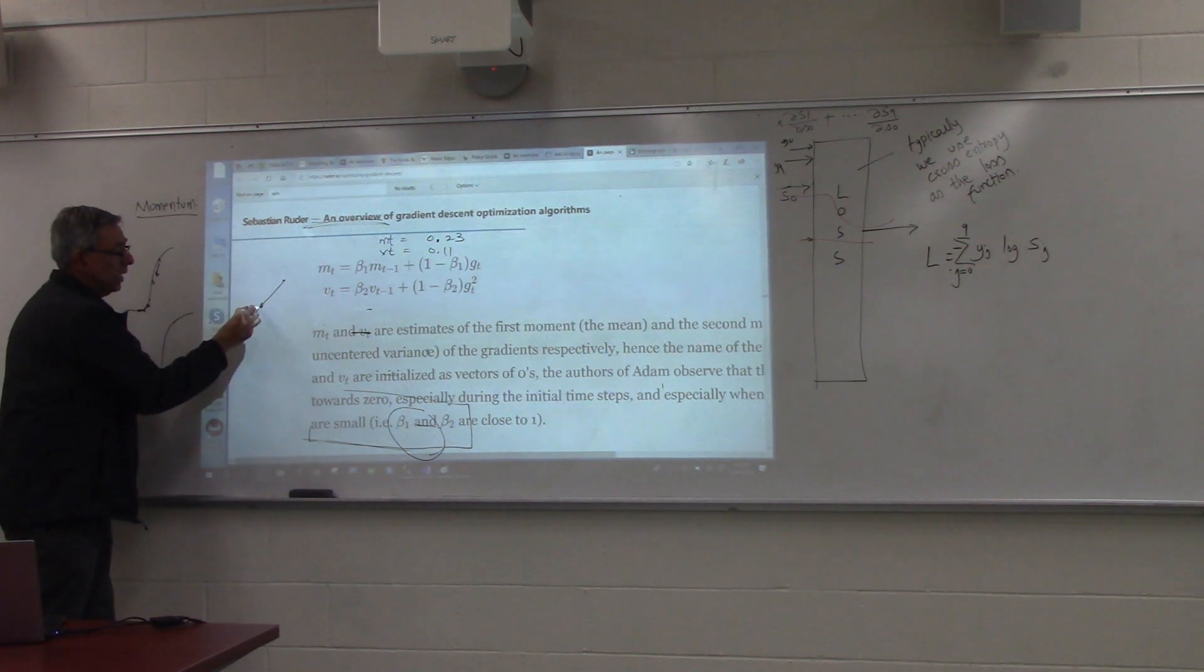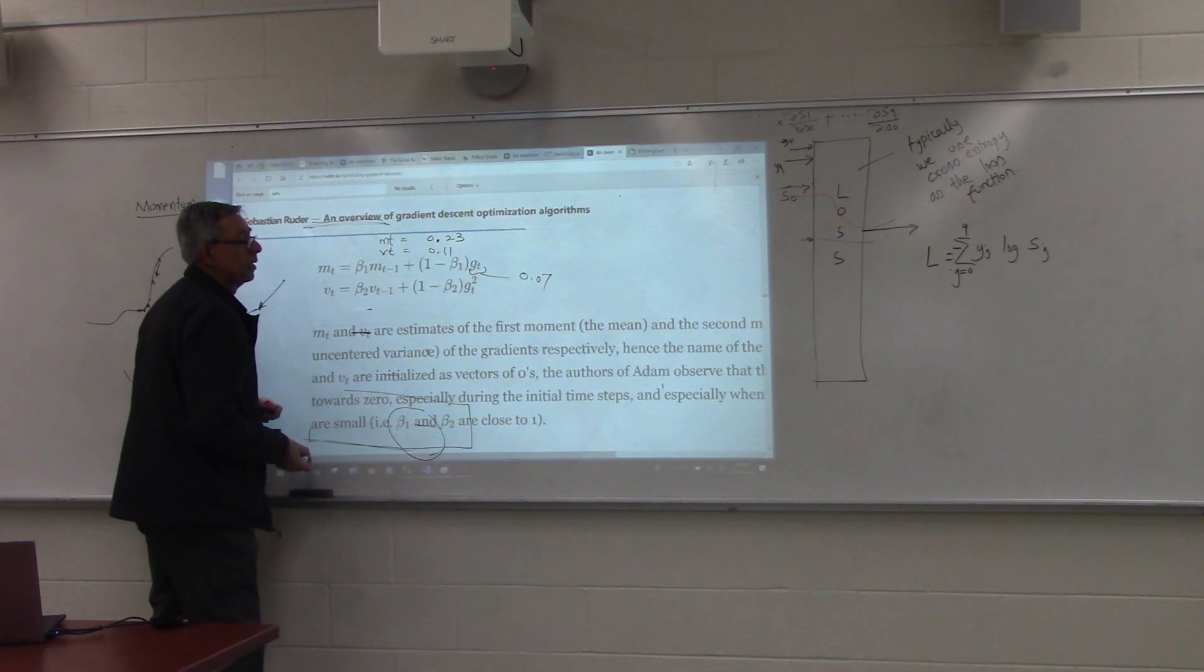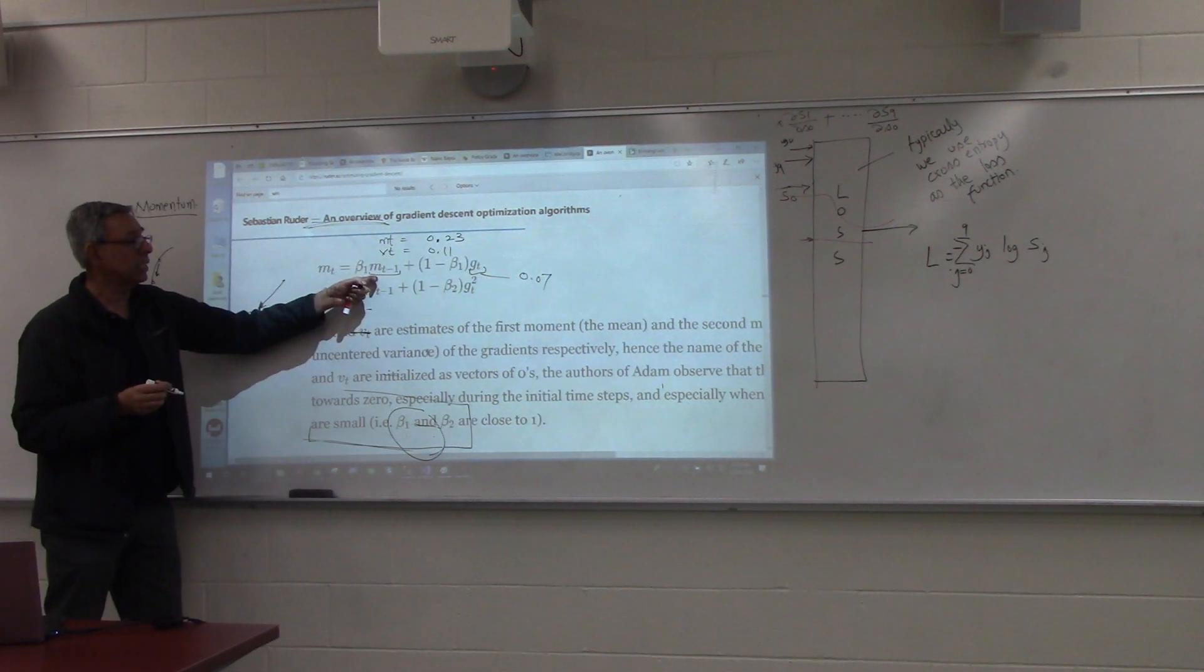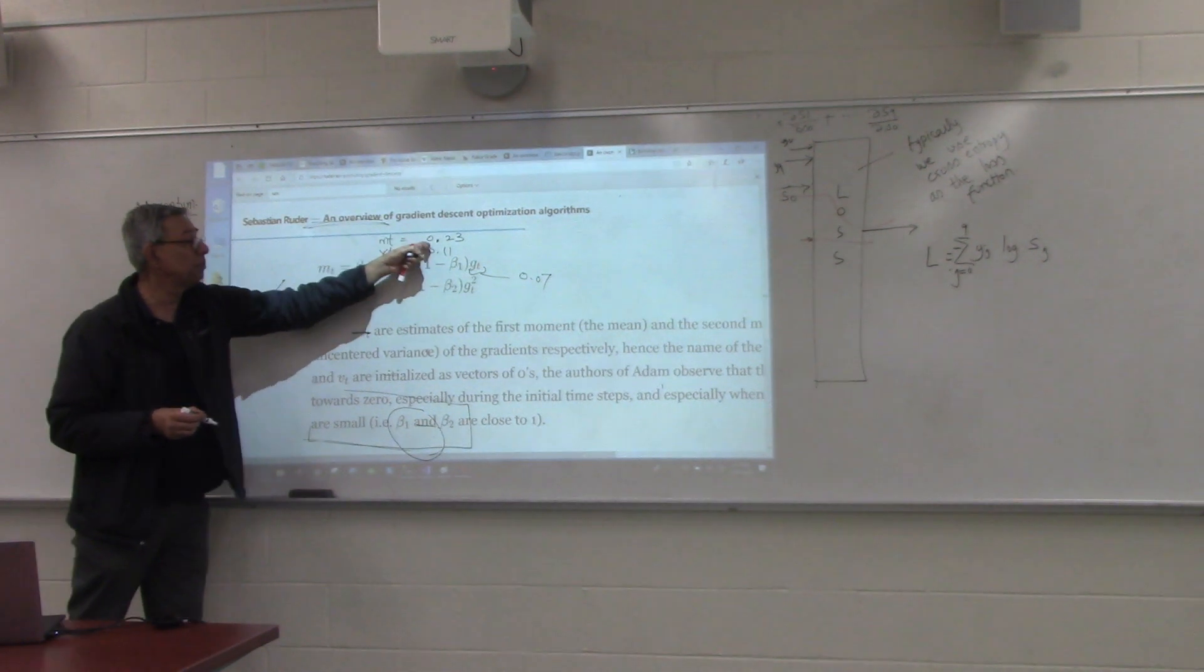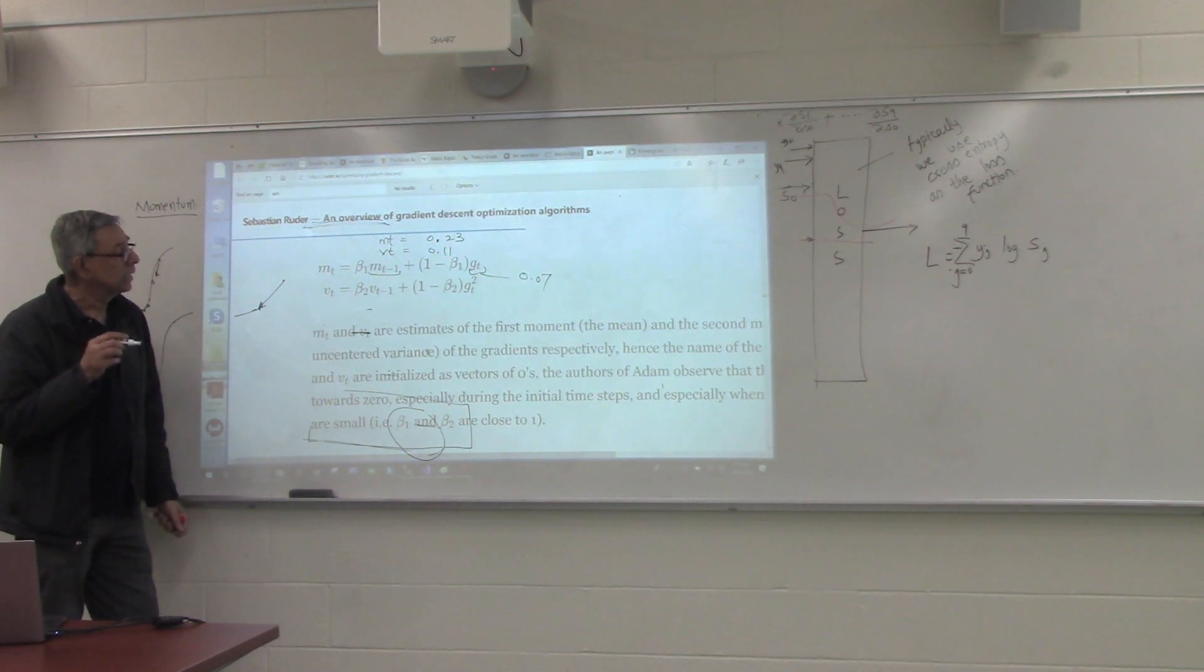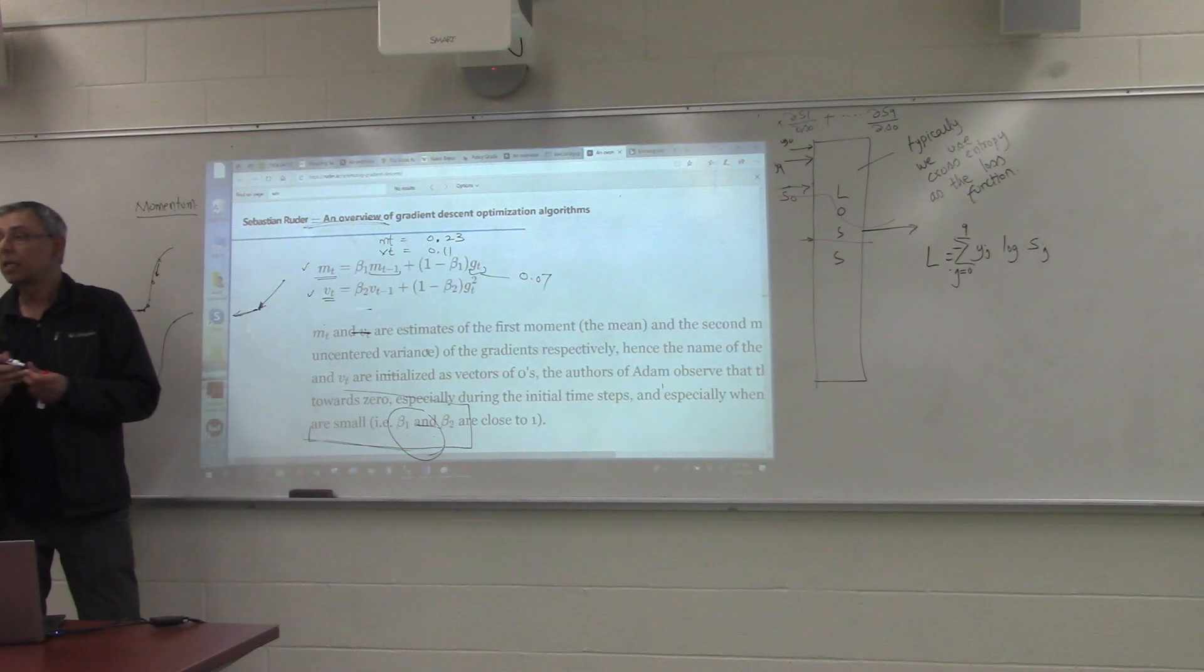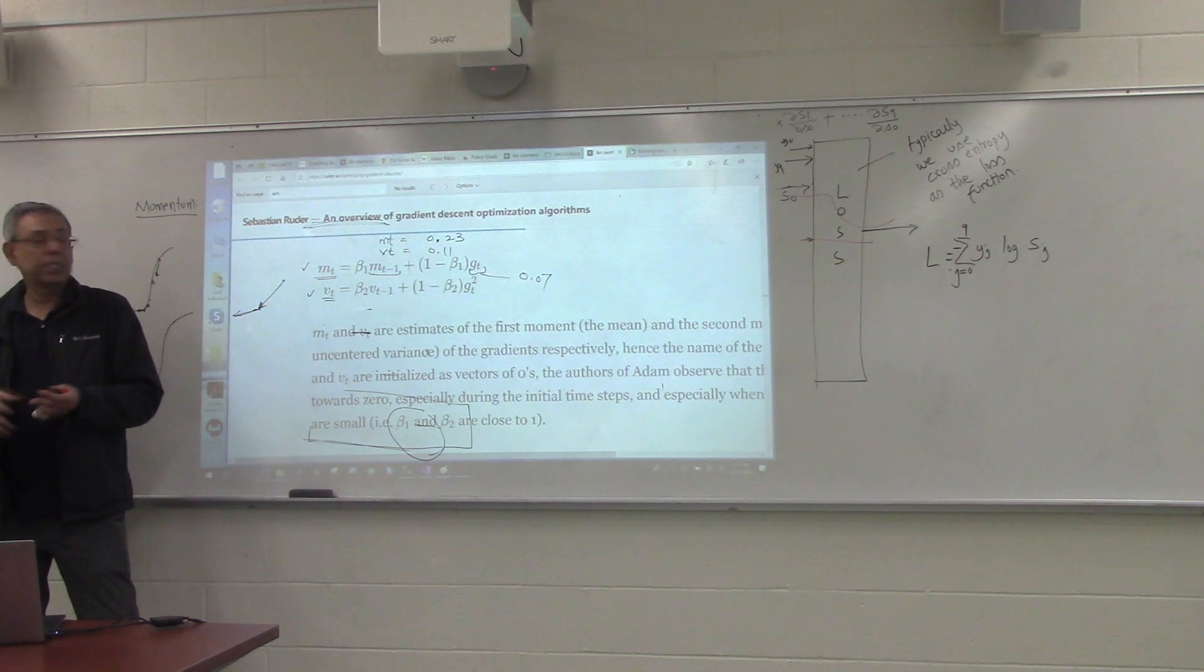Now, we already are here, so we compute the new gradient. So new gradient, suppose, is 0.07. Beta 1 is a number, right? And what will happen to mt minus 1 now? In this example, it will become the old value, 0.23. So we multiply the old mt by beta 1, which is typically 0.9. So we are discounting it. That becomes the new mt.